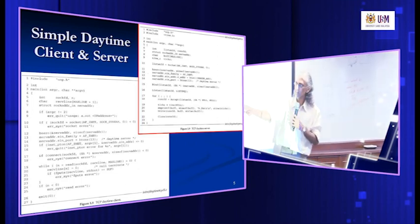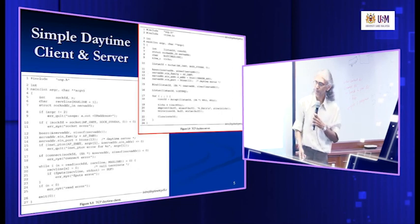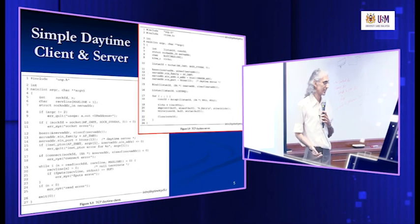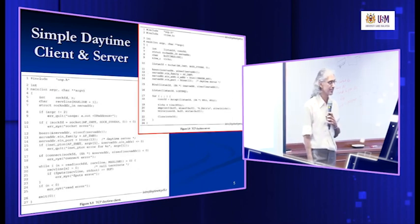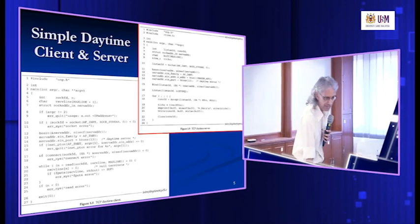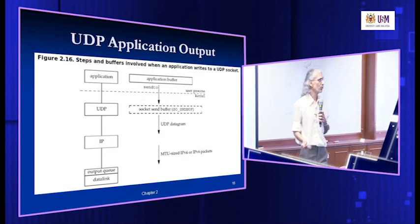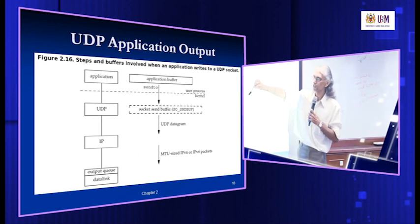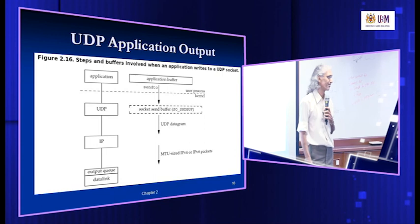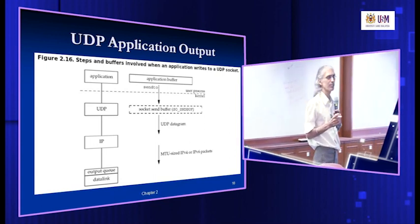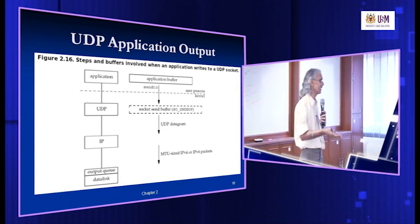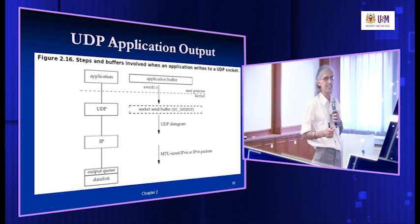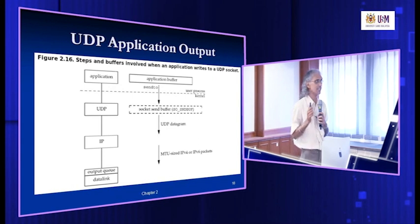At the TCP level, it will break data into MSS-sized segments, then at the IP layer it will break further to fit the MTU, and only then data is sent out. TCP does all that automatically. For UDP, since there is no reliability, error control, or flow control, whatever is in the buffer is sent straight to the IP layer without checking whether it can fit. It doesn't break it up — it just leaves it to the IP layer to handle. UDP will be faster because it doesn't go through all the details, but it's not reliable.